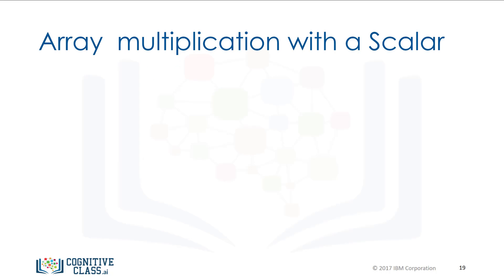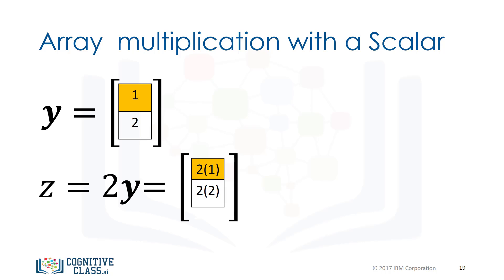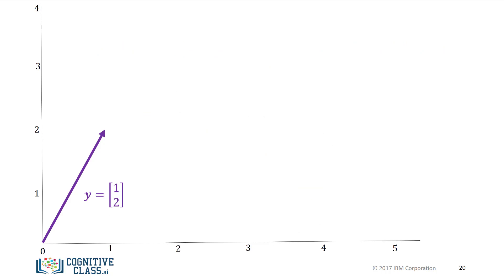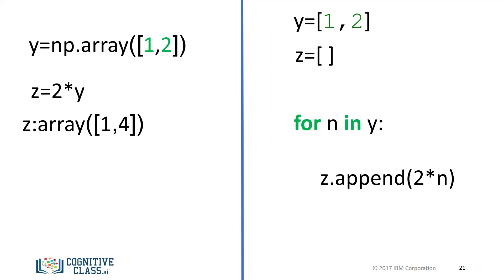Vector multiplication with a scalar is another commonly performed operation. Consider the vector y; we simply multiply the vector by a scalar value, in this case 2. Each component of the vector is multiplied by 2 and doubled. Visualizing with arrows, the original vector y is in purple; after multiplying by a scalar of 2, the vector is stretched out by 2 units as shown in red. Vector multiplication with a scalar only requires one line of code using NumPy, compared to multiple lines with Python lists, and the operation is also much faster.